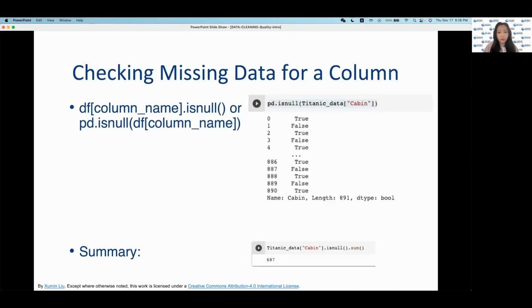To check missing data for a specific column, you just have to include the square brackets here next to the df and then specifying the column name through a string input. So you would do the quotations and then the name of the column. So here we are looking at specifically the cabin column and you can see all the true false outputs.